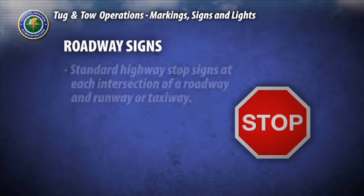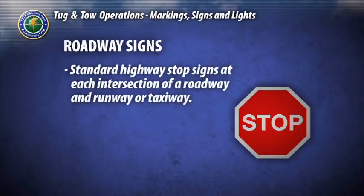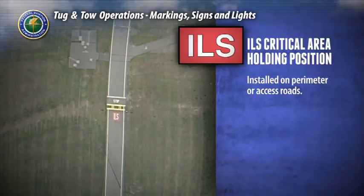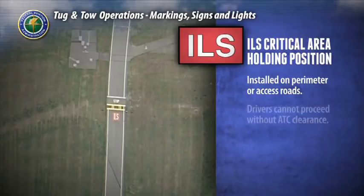Roadway signs consist of standard highway stop signs on vehicle roadways, located at each intersection of a roadway with a runway or a taxiway. Appropriate ILS hold signs should be installed on perimeter or access roads where a vehicle could enter an ILS critical area. At controlled airports, signs should also instruct drivers that they cannot proceed without air traffic control clearance.